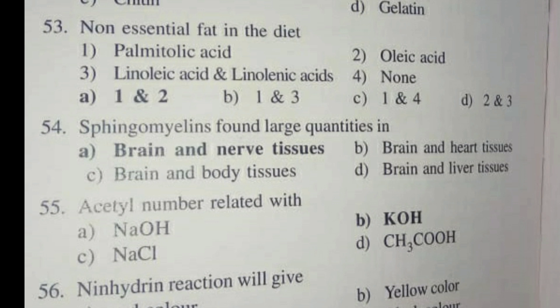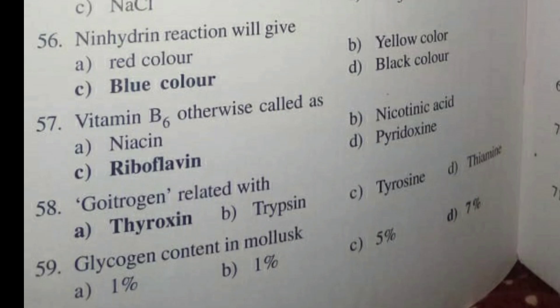Question 54 - Sphingomyelins found in large quantities in. The answer is A, Brain and nerve tissues. Question 55 - Ester number is related with. The answer is KOH, Alcohol group.